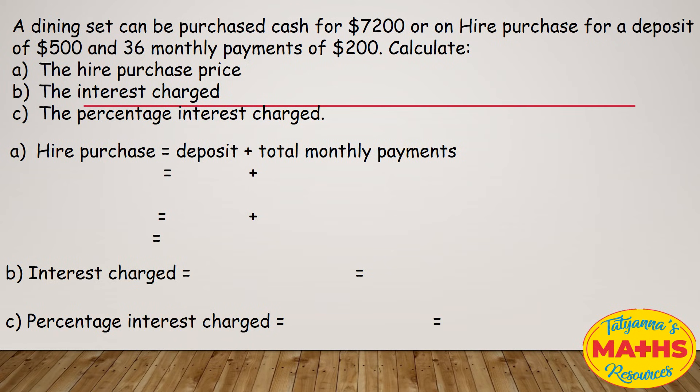A dining set can be purchased cash for $7,200, or on hire purchase for a deposit of $500 and 36 monthly payments of $200. Calculate A, the hire purchase price; B, the interest charge; and C, the percentage interest charge.